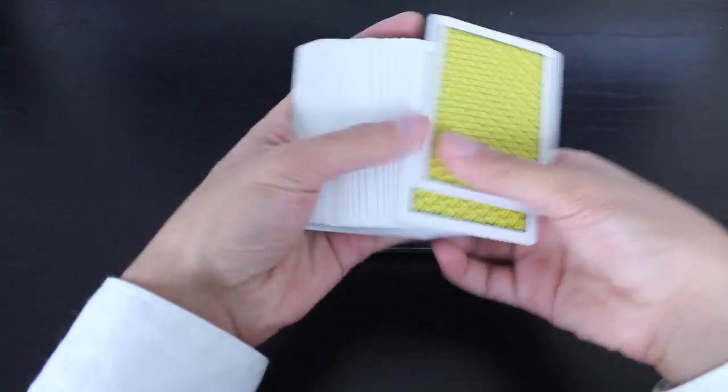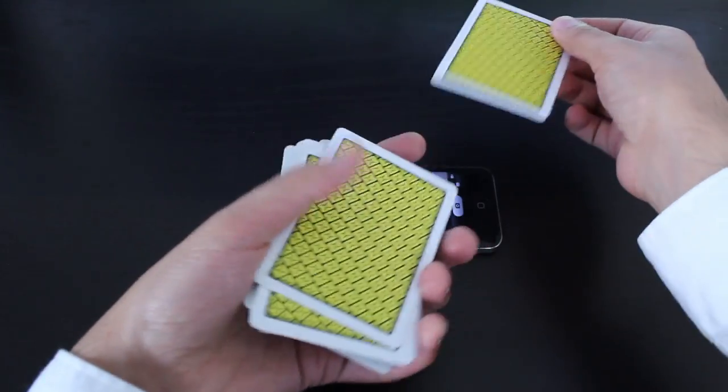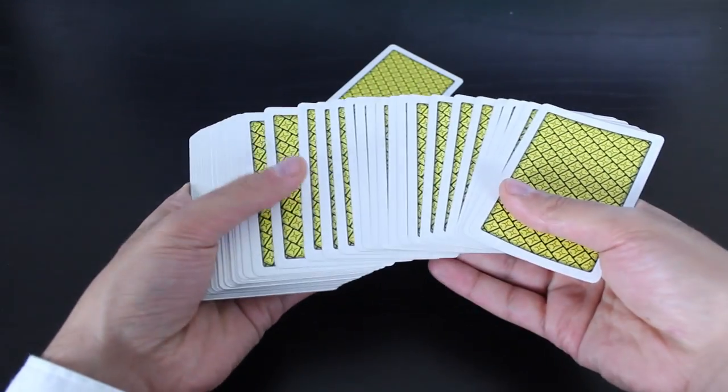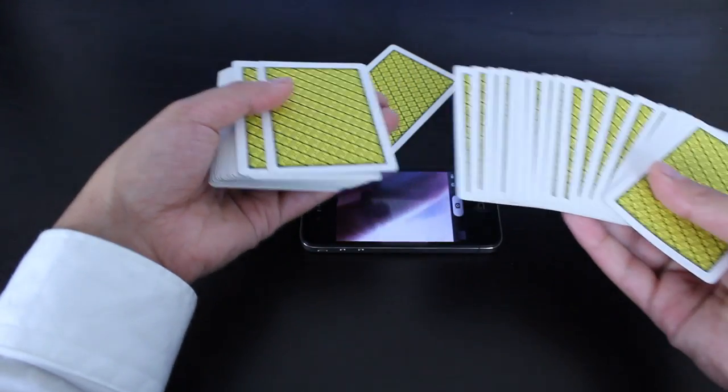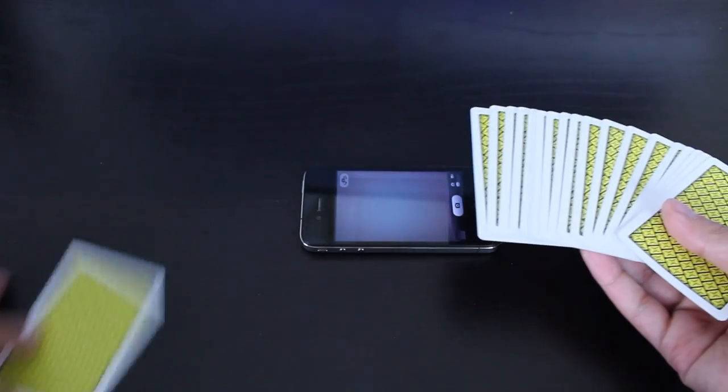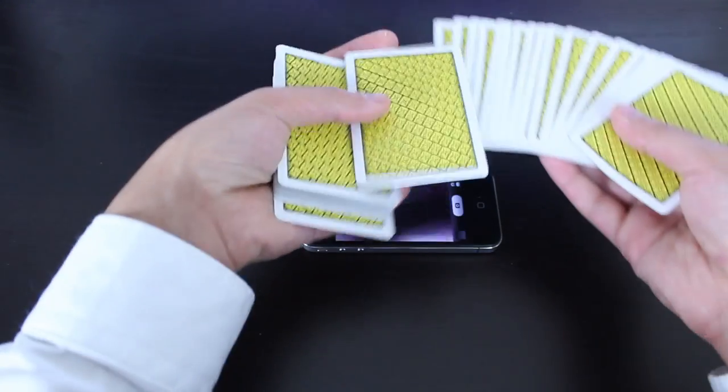You spread out the cards, have one selected. They take a look at it and then to have the card return to the pack, you're going to spread the deck again and say, okay, why don't you just place it right here? So they place the card right here. It's the three of clubs in this case.